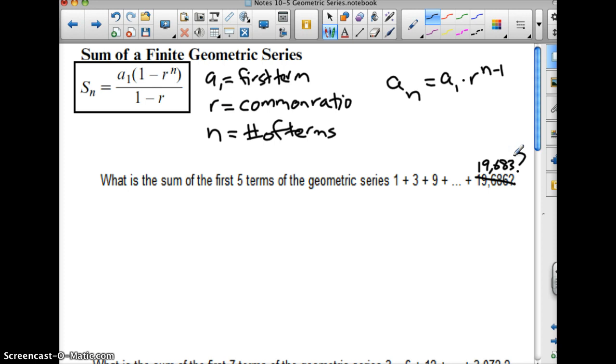What is the sum of the first five terms of the geometric series 1, 3, 9, and then 19,683? Well, if I want to find the sum of the first five terms, I'm going to have s sub n equals a sub 1, 1 minus r to the n over 1 minus r.